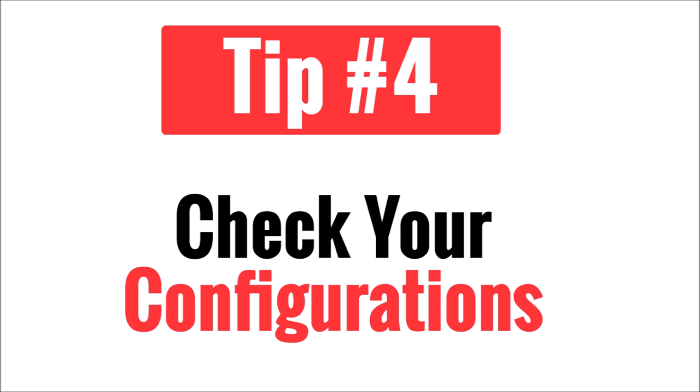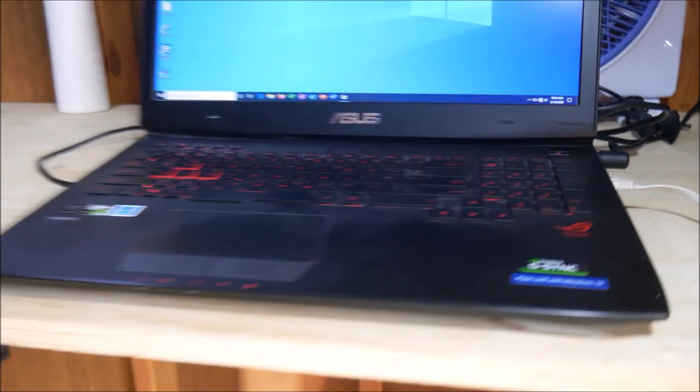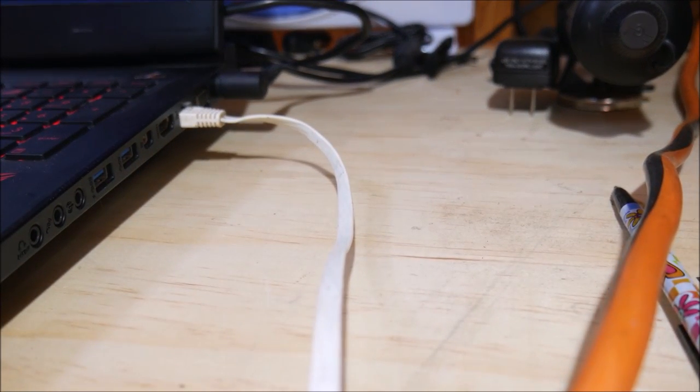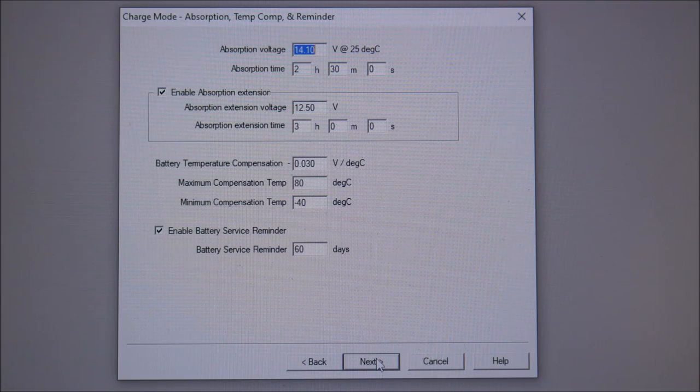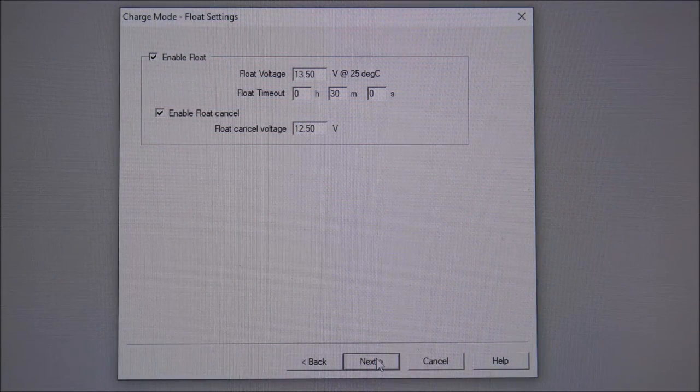Tip number four is to check that your components are configured properly. Most of the electronic components in a solar panel system are configurable for different voltages, battery chemistries, safety measures, and other parameters.